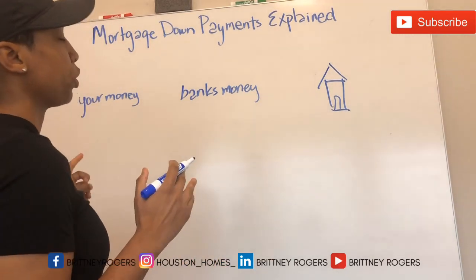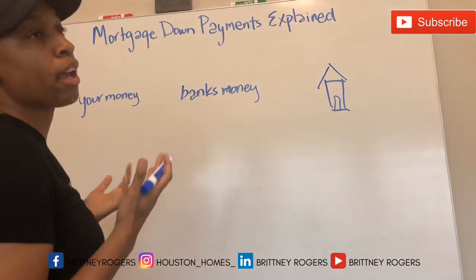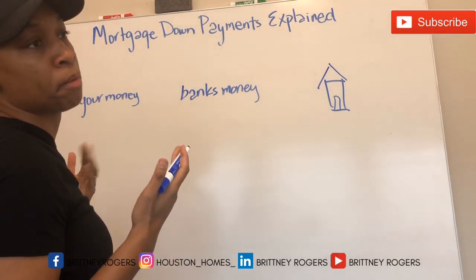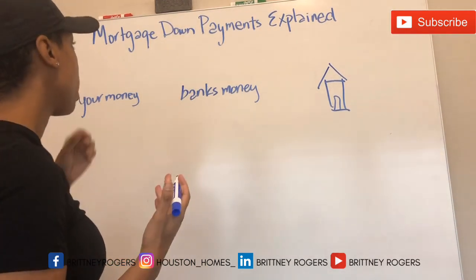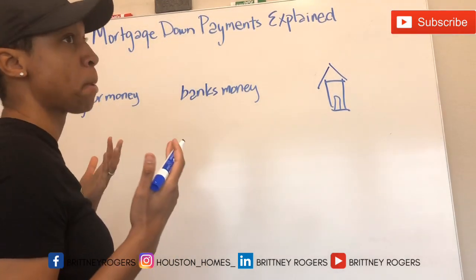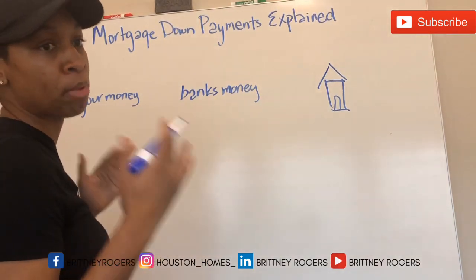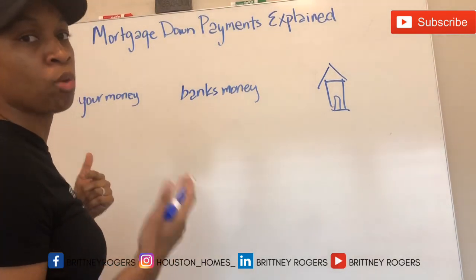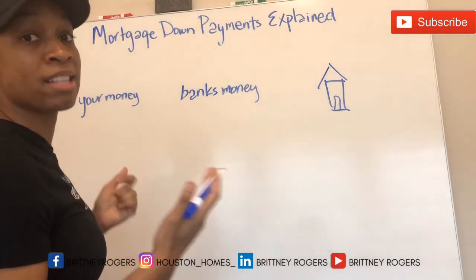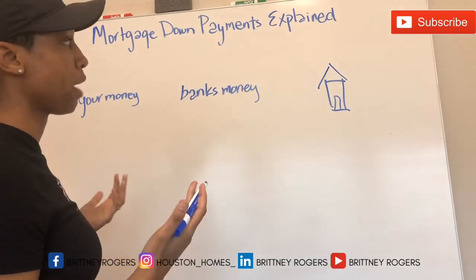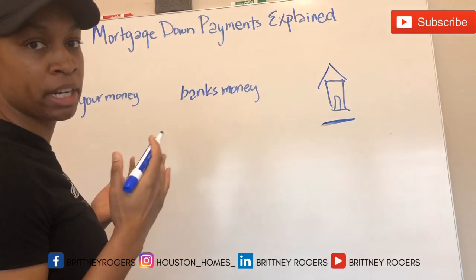Today, I'm going to talk to you guys through how down payments work and how you can calculate what down payment you would need for a particular property. A down payment is basically a percentage of the total amount that you're borrowing that a lender will require that you bring to the table in order for them to give you the rest of the money and allow you to buy whatever property it is you want to buy.